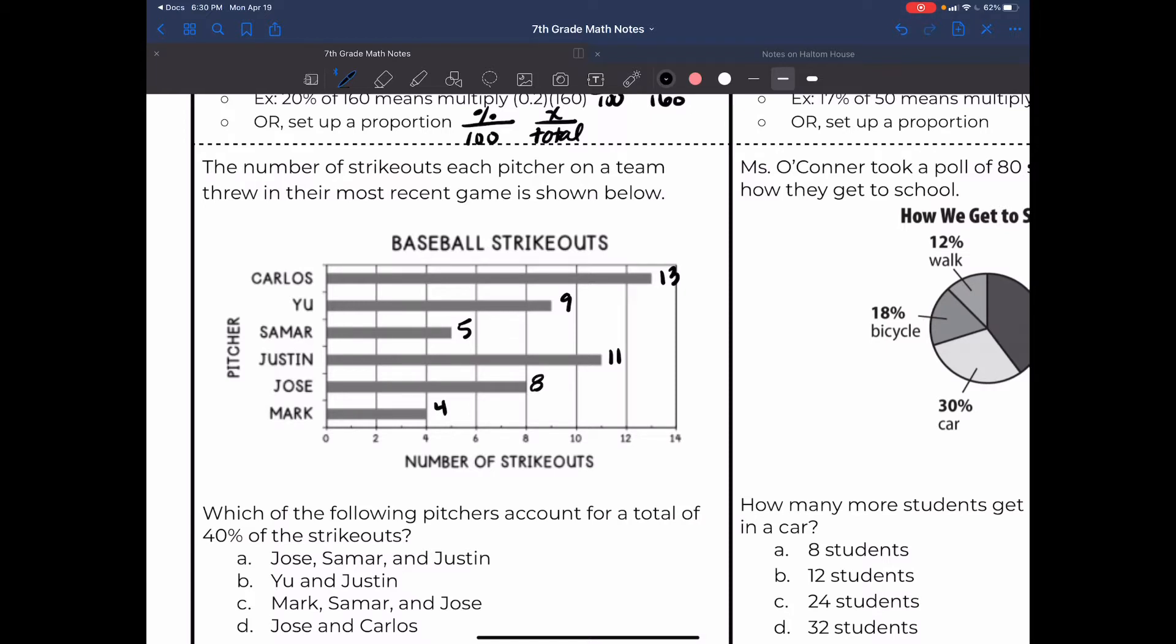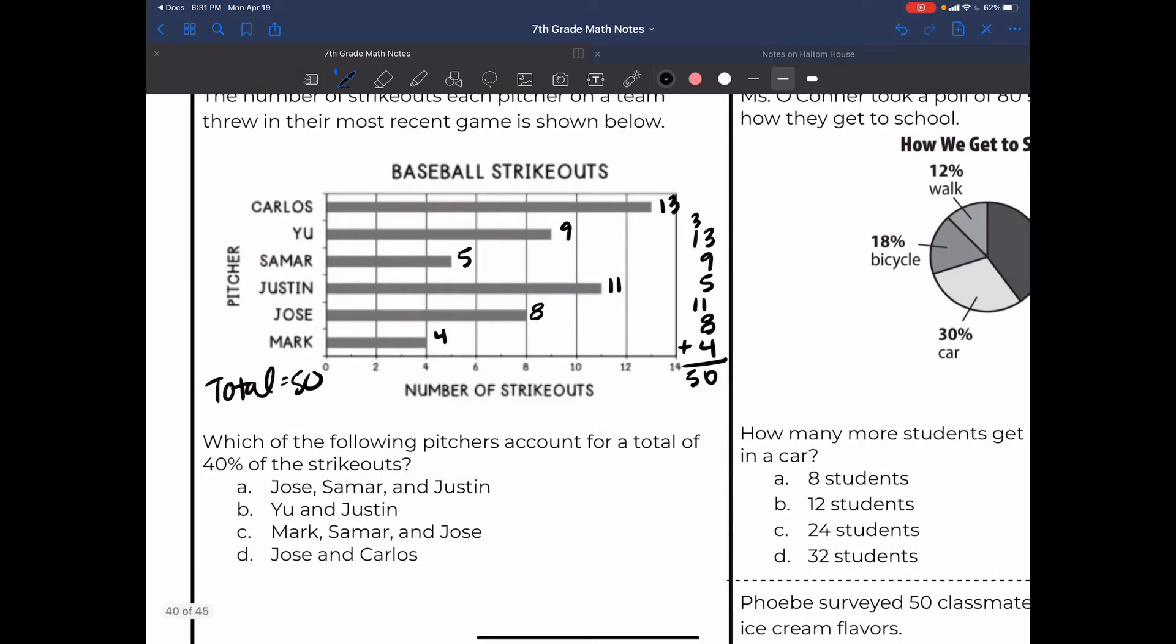All right, so you got 9, Samar got 5, Justin got 11, Jose got 8, and Mark got 4. That's each player's personal amount of strikeouts, but we still don't know the total total. So let's add up all of these: 13 plus 9 plus 5 plus 11, 8 and 4 to figure out how many total strikeouts there are. 50. So my total is 50.